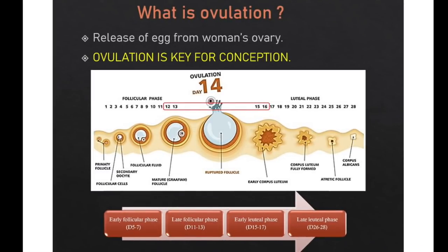The process of ovulation is the release of an egg from a woman's ovary, which is key for conception. In females having regular cycles, ovulation occurs somewhere between 12 to 16 days. As we all know, there are 4 phases of the menstrual cycle: early follicular phase, late follicular phase, early luteal phase, and late luteal phase.